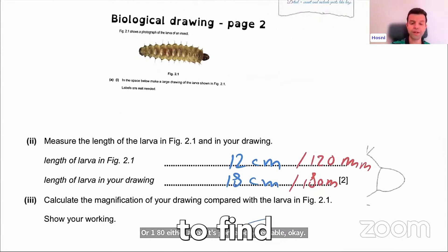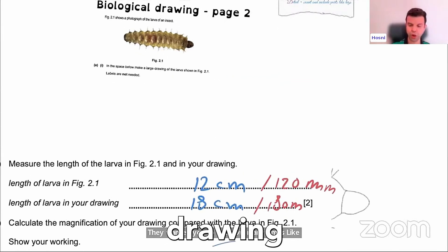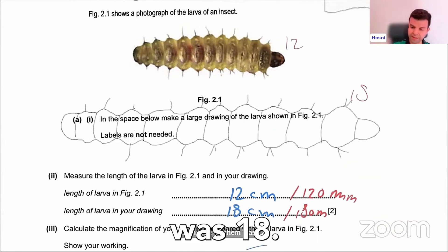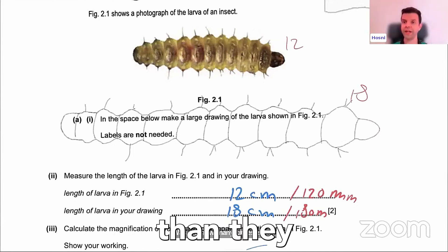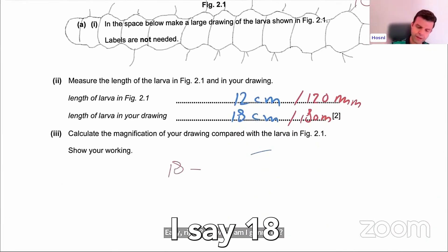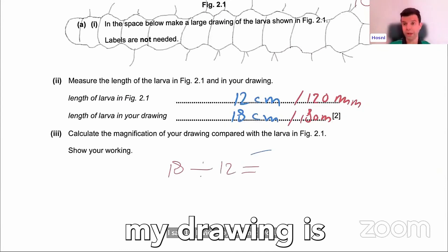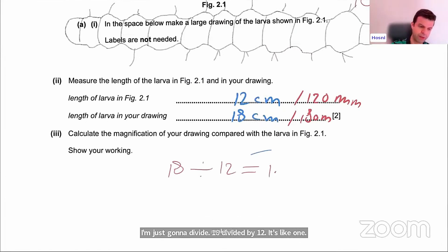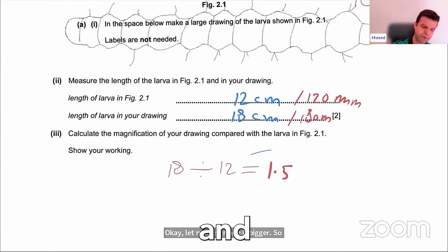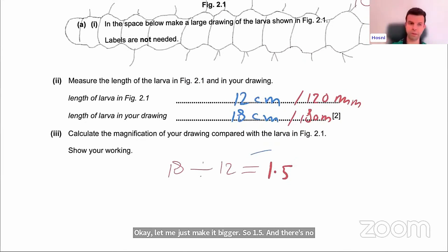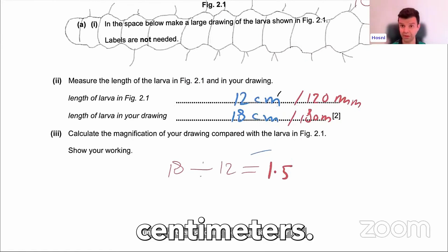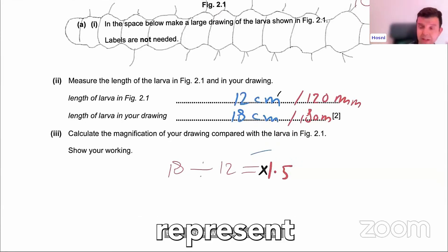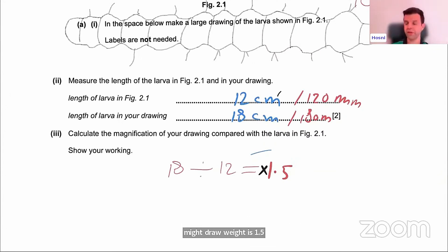Now, what do they want you to do? They want you to find how many times your drawing is bigger than the original. With both measurements — one was 12, one was 80 — so how many times is 80 larger than 12? You say 80 divided by 12, which gives you how many times your drawing is bigger. That's about 1.5. There are no units for magnification, because when you divide centimeters by centimeters they cancel. But for formality, we put a small x before it — meaning my drawing is 1.5 times bigger than the original.